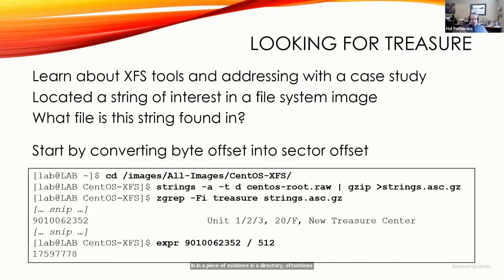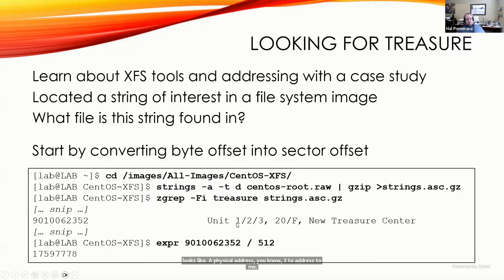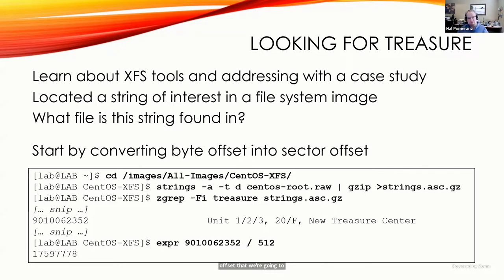I've run strings against our XFS filesystem looking for 'buried treasure'. I found one particularly interesting hit — it looks like a physical street address: 'Unit 123, 20F New Treasure Centre Building'. I'm curious why there's a street address like that in the middle of my filesystem. This is the byte offset we're going to start with to figure out what file this string is part of.